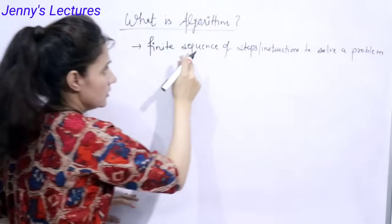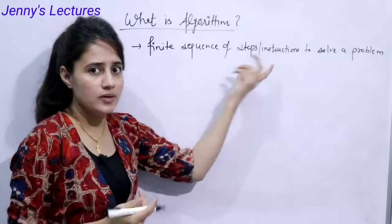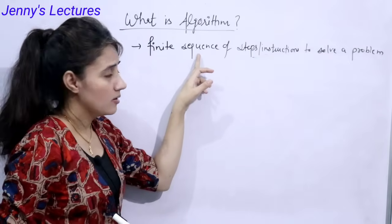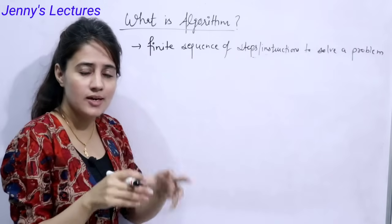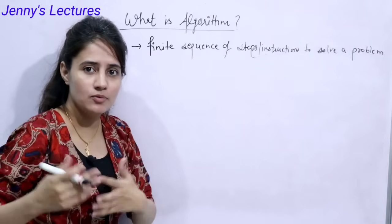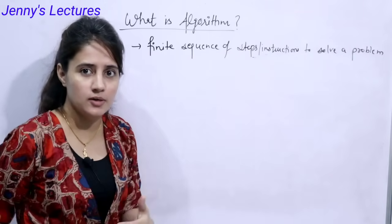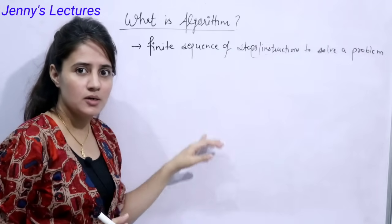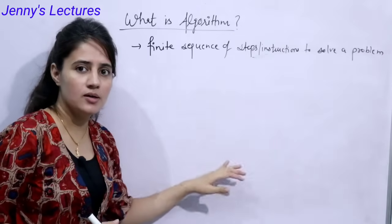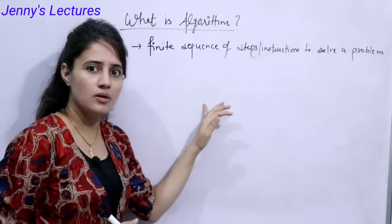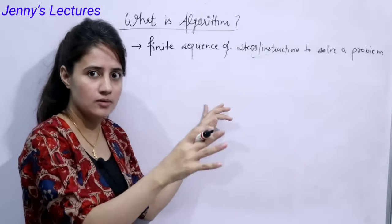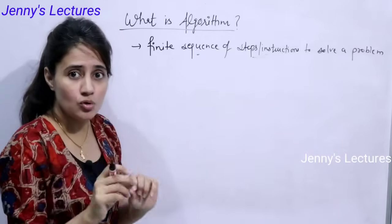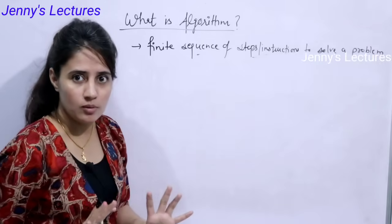It's better to say 'sequence of steps or instructions' rather than 'set of steps,' because in a set we can have repeated values, but that should not be the case in an algorithm — we cannot repeat the same step again and again. One step appears one time. So it's better to say: a finite sequence of instructions to solve a problem.